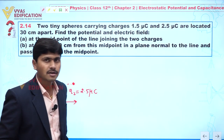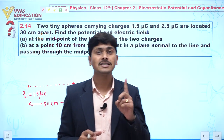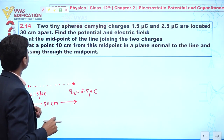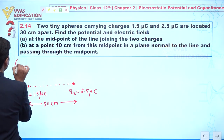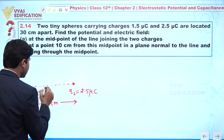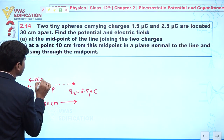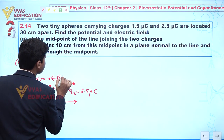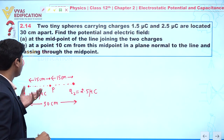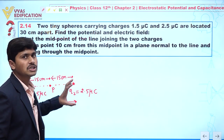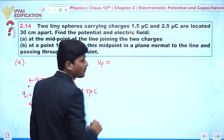Our objective is to calculate both electric potential and electric field at the midpoint of the line joining the two charges. Let's suppose the midpoint is point P. From here we can see the distance from each charge to P is 15 centimeters on both sides. We first find the electric potential at point P.